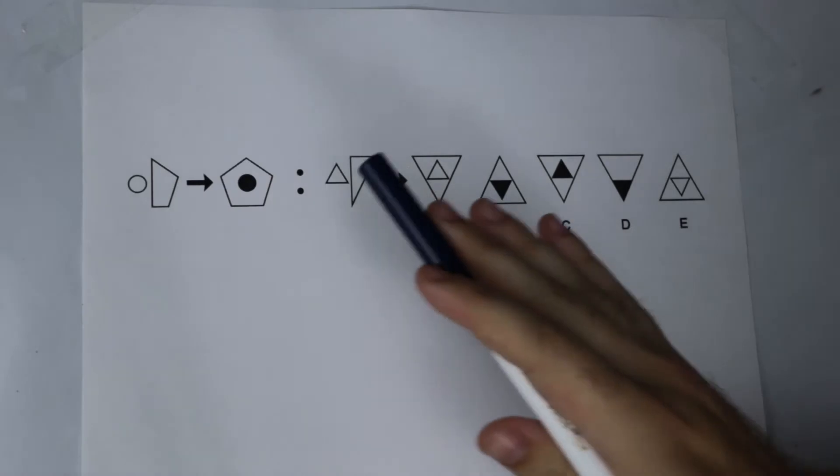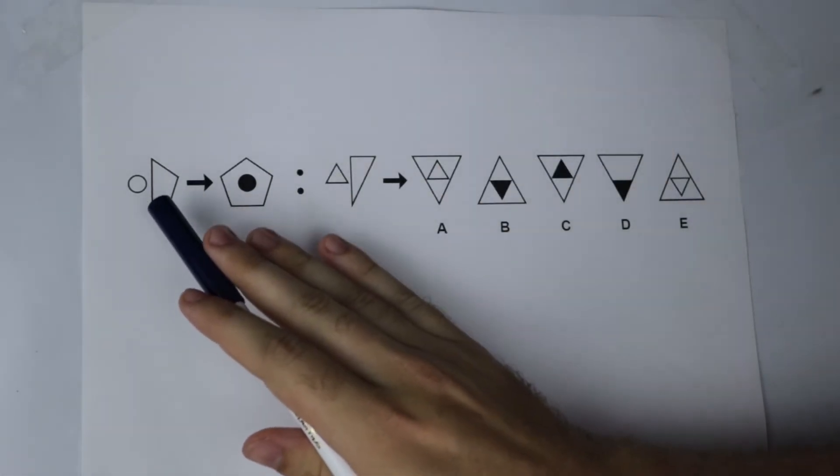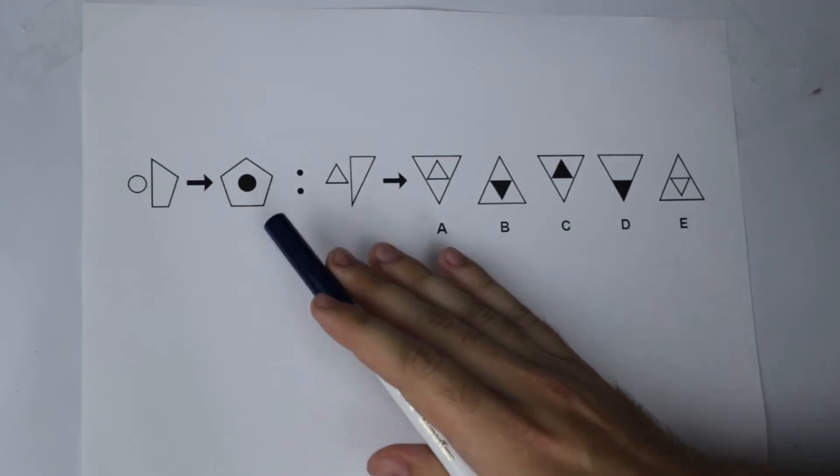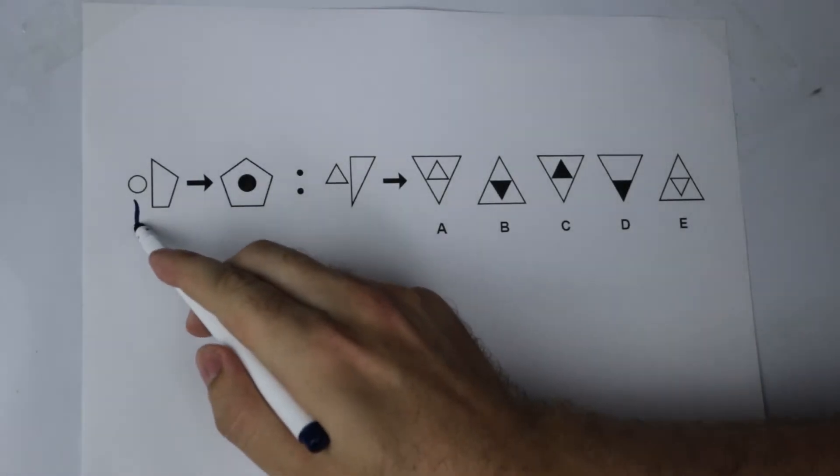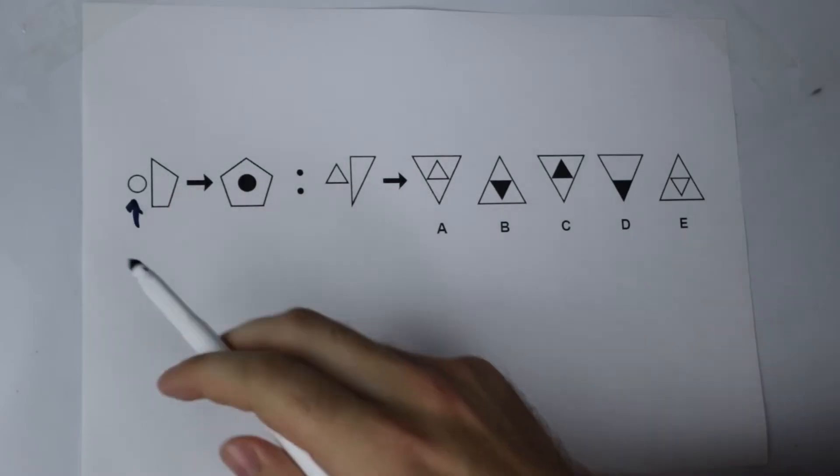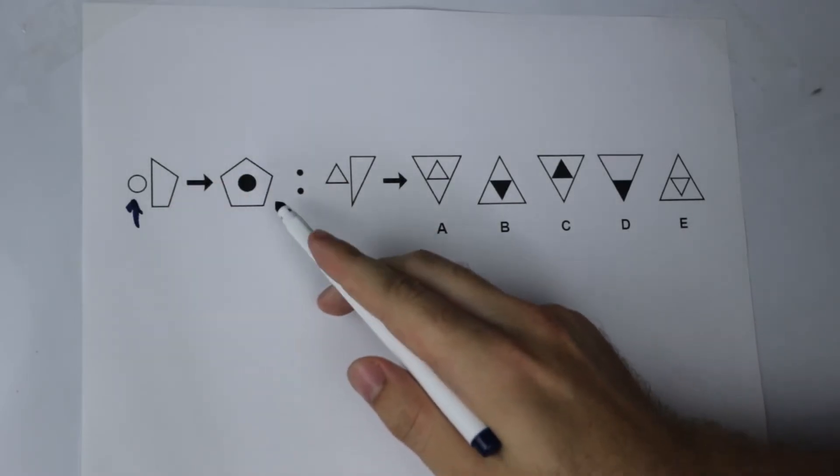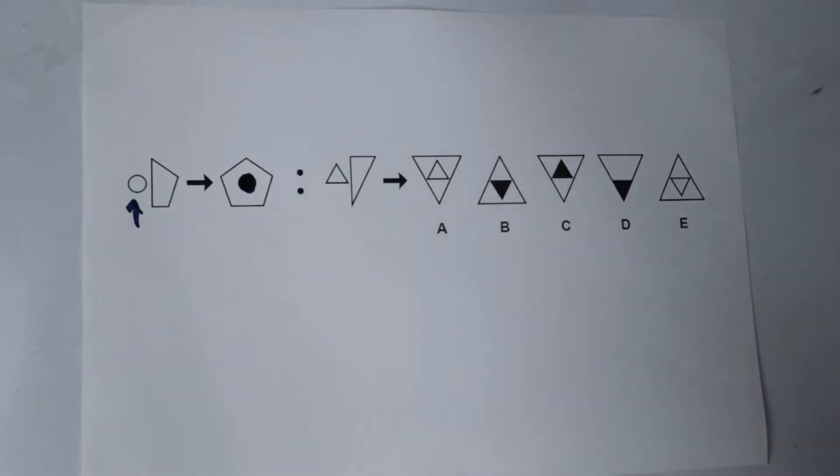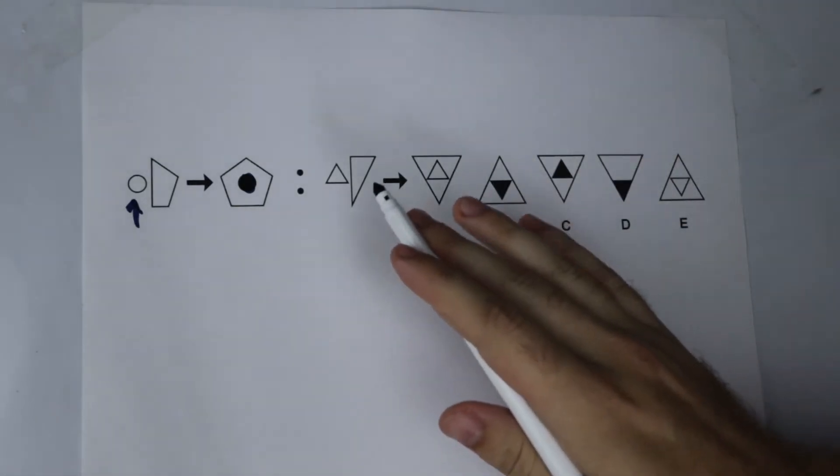So the best way to go about this is to isolate one feature at a time in our first shape to see how it changes as it moves into our second shape. Now looking here I can see that we are given a circle on the left that is not shaded in, and after the transformation it becomes a circle that is shaded in.